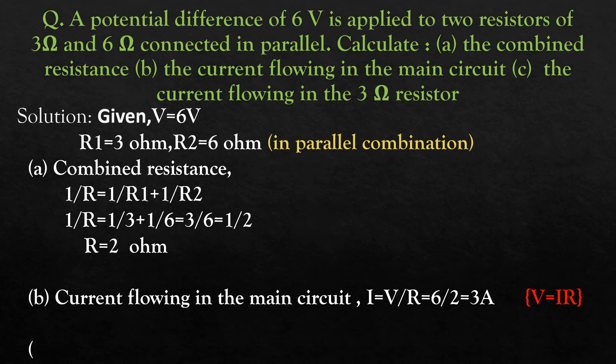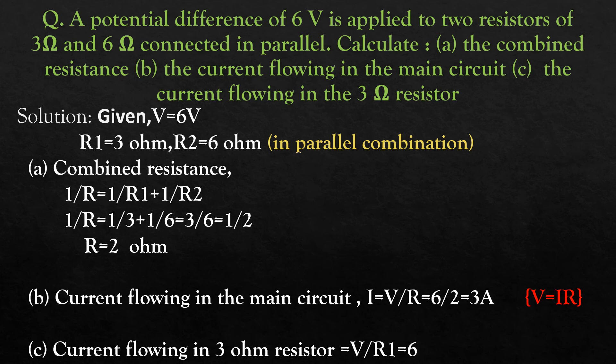Now the third question is the current flowing in the 3 ohm resistor. They asked for the current through the 3 ohm resistor. In parallel combination, voltage will not change - it's the same voltage. So I = V/R1 = 6/3 = 2 ampere.